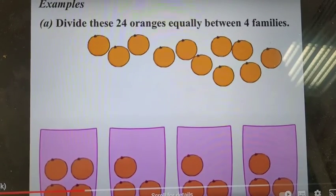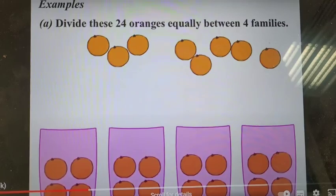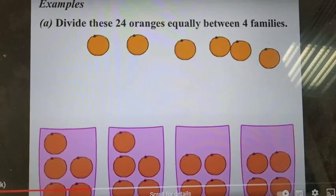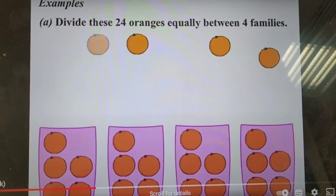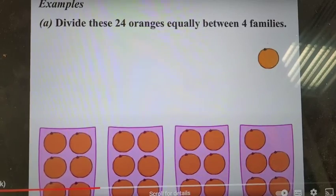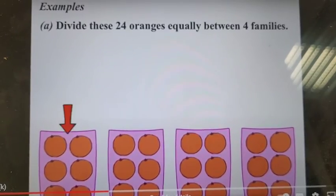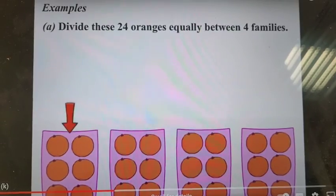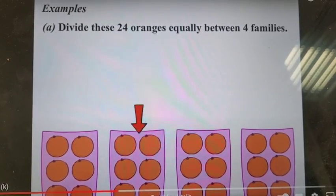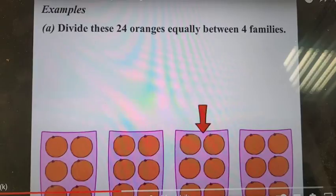Having done so, the kids will be able to identify or see that in each group were 6 oranges. So that means that 24 divided by 4—yes, each family gets 6 oranges.